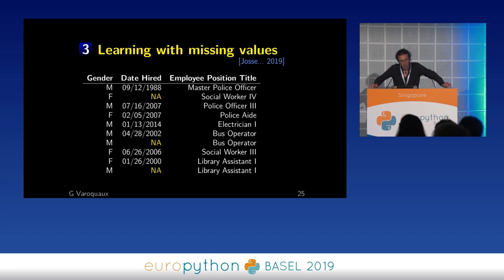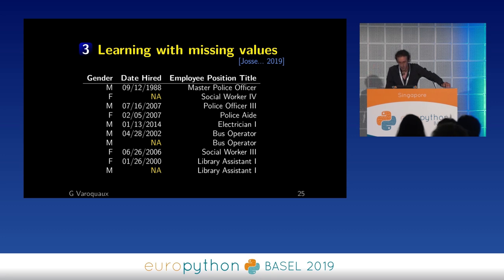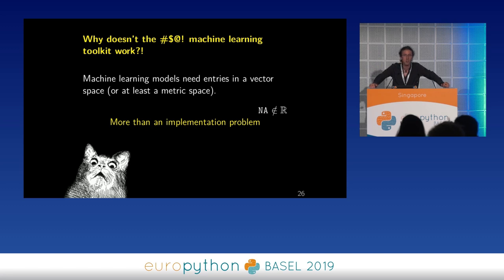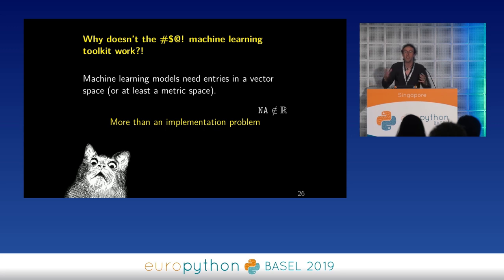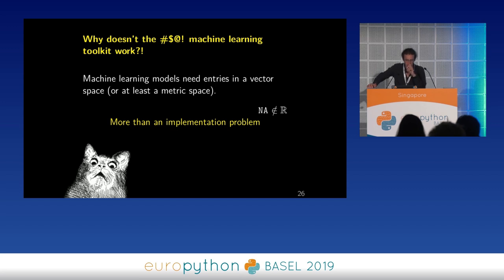Now I want to talk about one last thing: learning with missing values. We've dealt with non-formatted categorical data, and now we need to deal with the fact that some of our values are missing. Why doesn't the machine learning toolkit work on this? There is a fundamental reason: machine learning models tend to need entries in a vector space, or at least a metric space, or at least an ordered space. It's easier for machine learning to draw analogies if it knows links between data — and a missing value is nowhere there. So it's slightly more than an implementation problem; there is a fundamental issue.